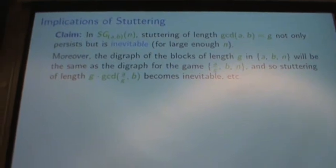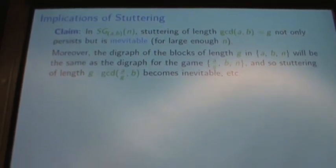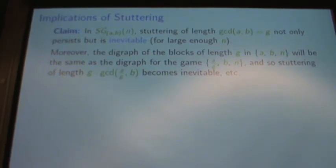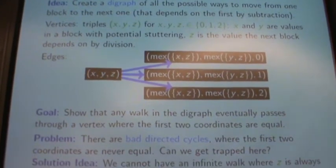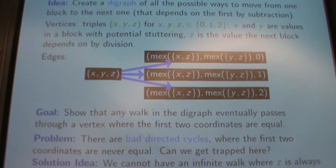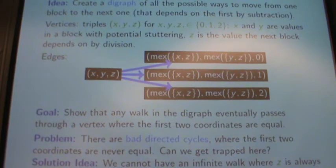Since we have a little bit of time, let's look at this claim. I said before it was like I gave you the inductive part of the proof and not the base case. All I've really justified so far is that once stuttering occurs once, it's going to continue. I want to talk about this important base case — that stuttering really is inevitable. I'm going to jump to my secret cache of extra slides. The idea is that we're going to make a different diagram that encodes all of the possible ways we could get from one block to another block.